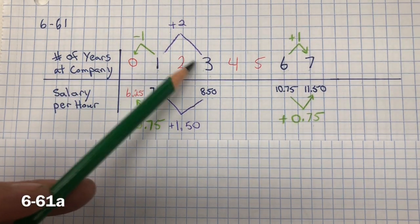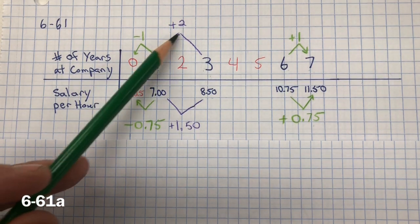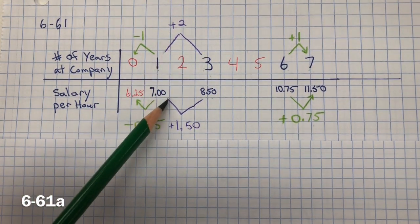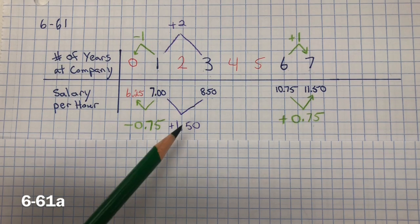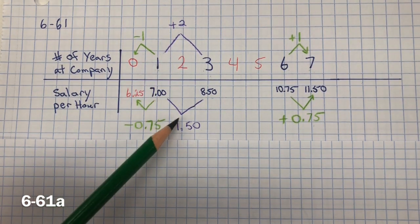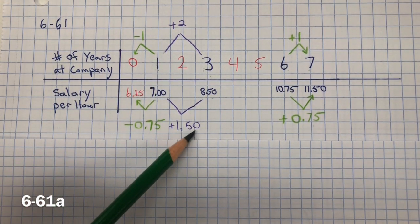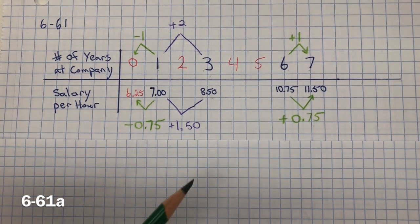I could have also done it from 1 to 3. So that's 2 years. For every 2 years, there's an increase of $1.50. So to find 1 year, divide that by 2, and you get 75 cents.